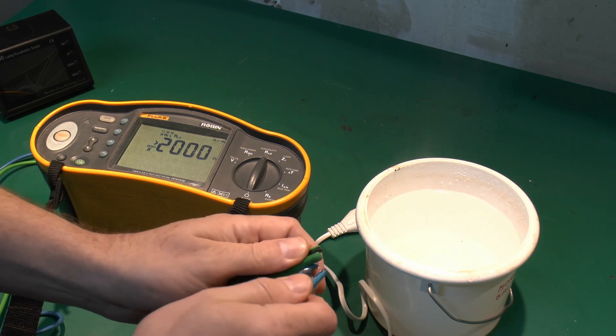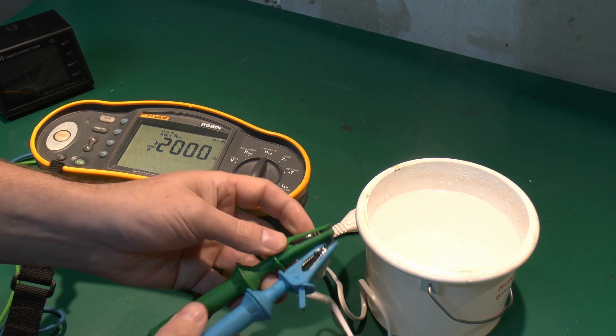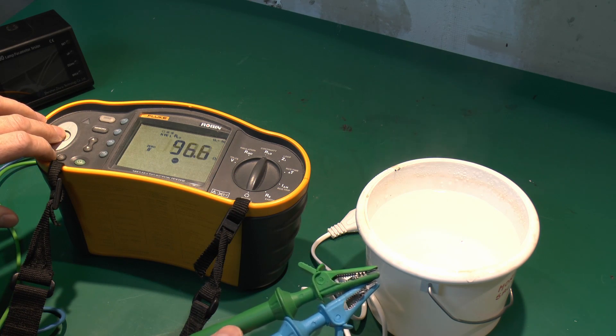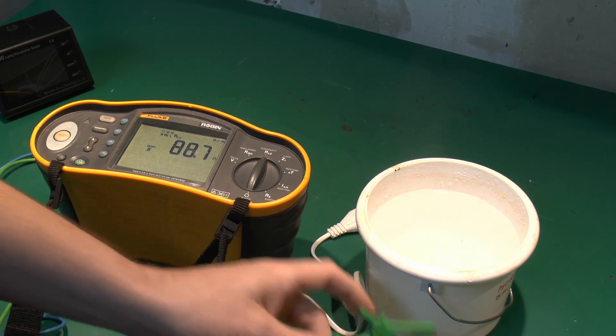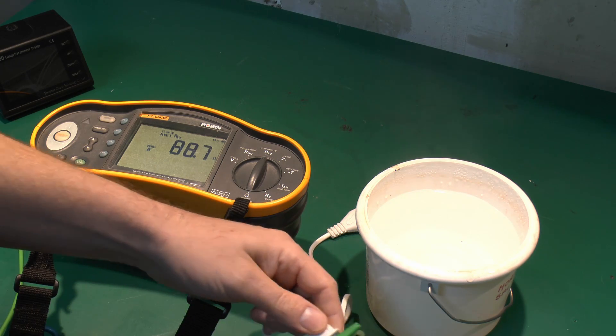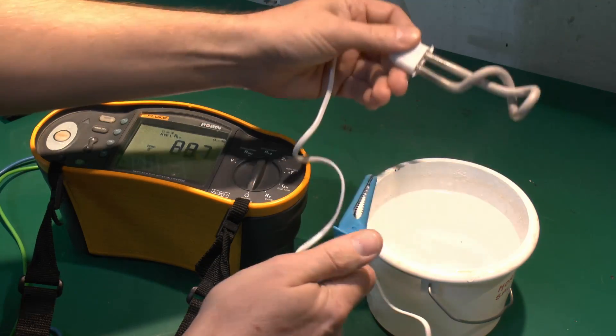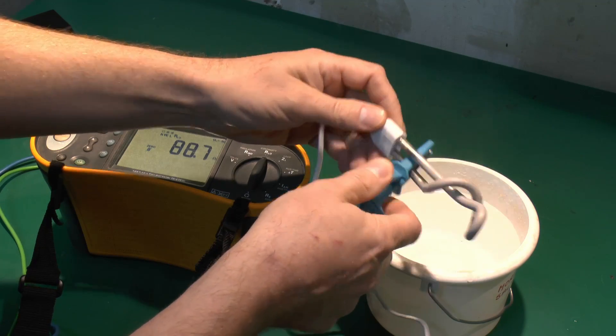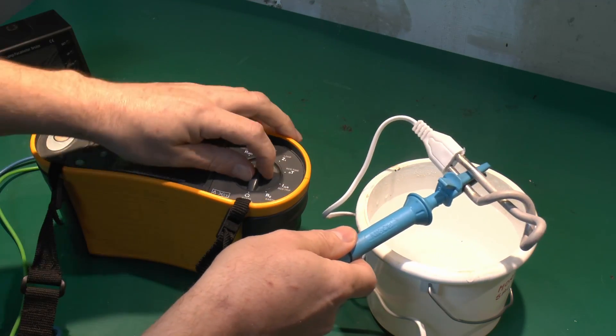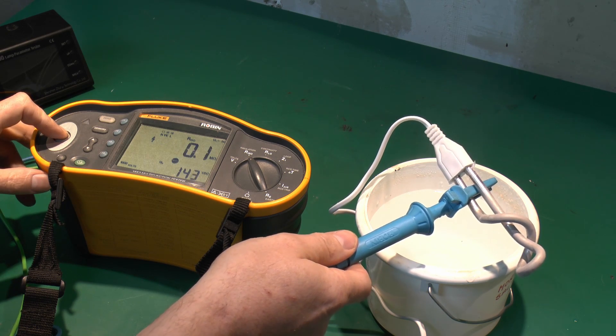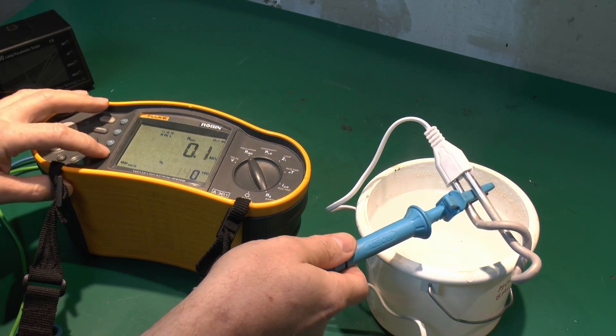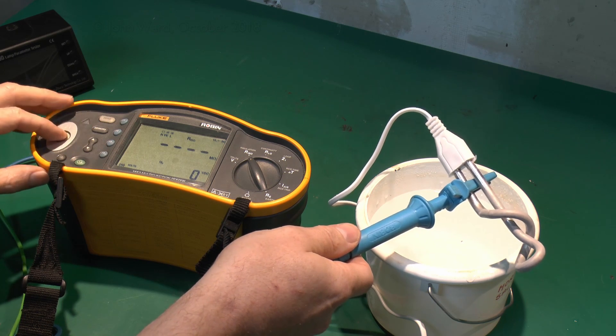Yeah, sort of 85 odd ohms as we had before, but certainly the insulation resistance is significantly down. Let's try that again on the 1000 volt range. Yep, again it's 0.1 megaohms, so that is actually a fail.